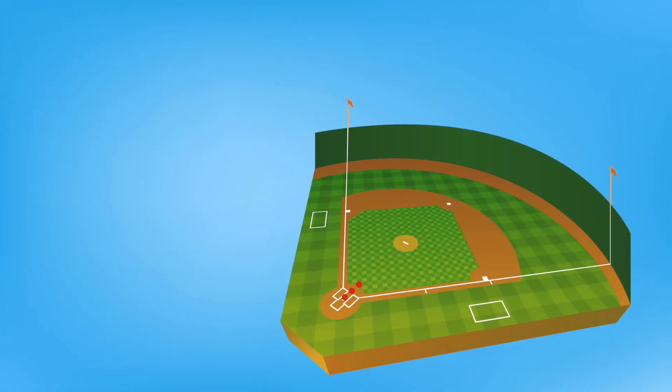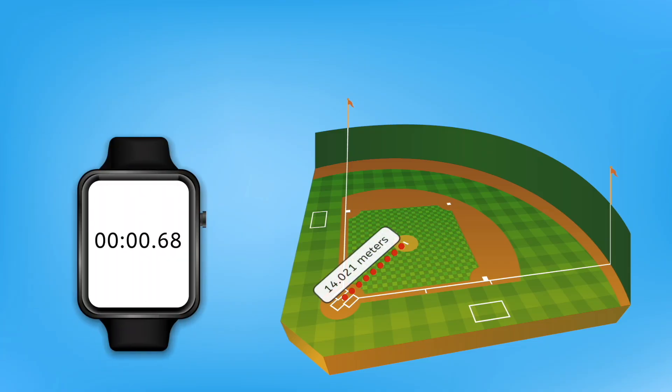This pitcher is throwing fireballs. Maybe if we could help Mia determine how fast the ball is moving, she'll be able to time her swing and get a hit. The distance from the pitcher's mound to home plate is 14 and 21 thousandths meters, and according to my watch, it's been taking the ball around 68 hundredths of a second to get from the pitcher to home plate. If we knew how many meters the ball traveled per second, we could help Mia time her swing.